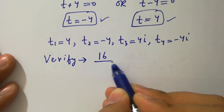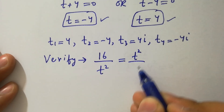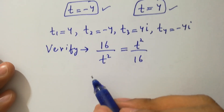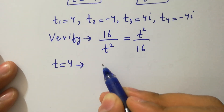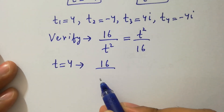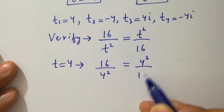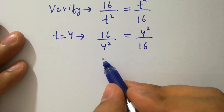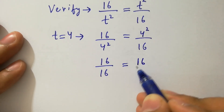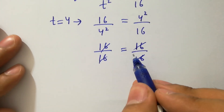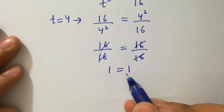The original equation is 16 over t squared equals t squared over 16. First, put t equals 4: 16 over 4 squared equals 4 squared over 16, which gives 16 over 16 equals 16 over 16, so 1 equals 1. Left hand side equals right hand side.